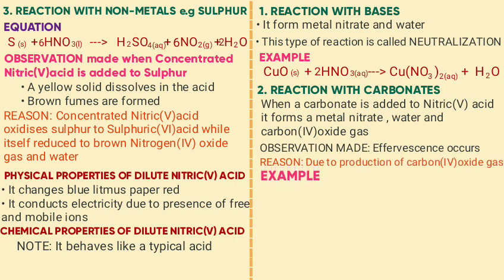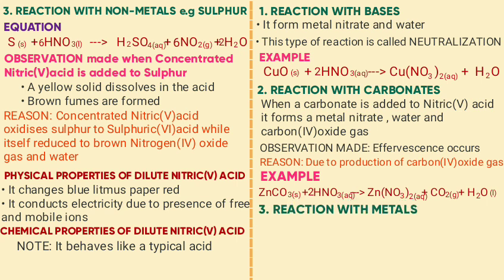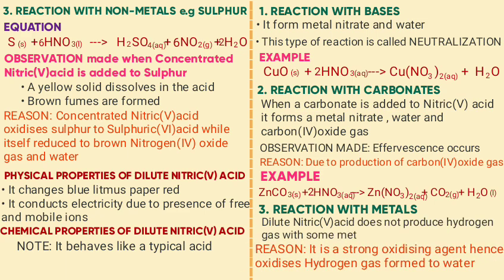Example equation: zinc carbonate plus 2HNO3 gives zinc nitrate plus CO2 plus water. Lastly, reaction with metals: dilute nitric acid does not produce hydrogen gas with metals as expected. The reason is that nitric acid is a strong oxidizing agent and therefore oxidizes the hydrogen gas formed to water.